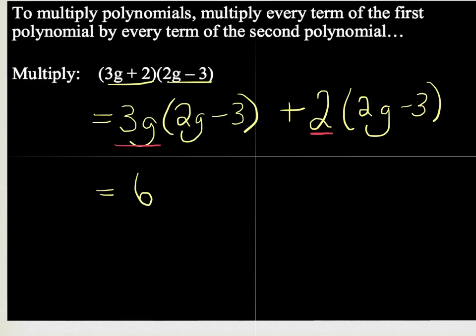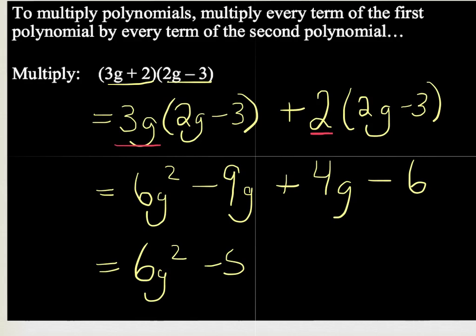3g times 2g is 6g squared. 3g times minus 3 is minus 9g. 2 times 2g is 4g, and 2 times negative 3 is negative 6. Putting it all together, we get 6g squared minus 5g minus 6. I hope that's what you got.